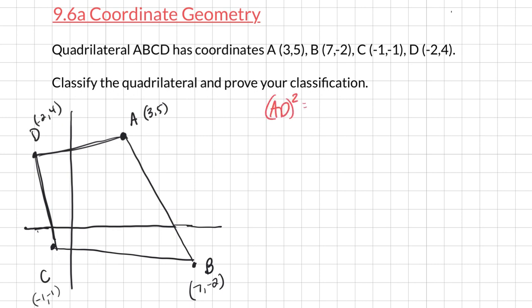AD squared. And I'm going to go ahead and figure out what is my change in Y and my change in X. My change in Y, I can see it right there, is only 1. 5 minus 4. But I'm going to go ahead and show the math just to make sure that it's really clear because I need to have a proof. So I'm going to make sure that all of the math is there and that no one can argue with it.